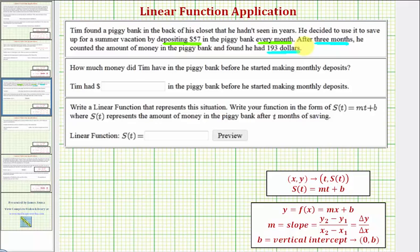The first question is: how much money did Tim have in the piggy bank before he started making monthly deposits? The first thing to recognize is that because the savings amount is increasing at a constant rate of $57 per month, we can use a linear function to model the situation.